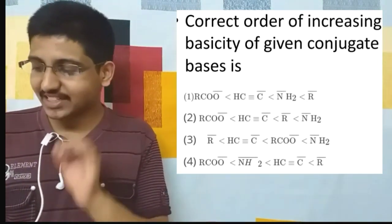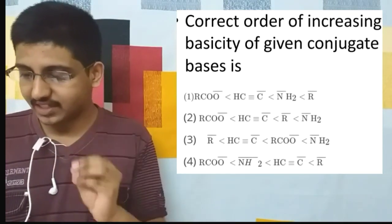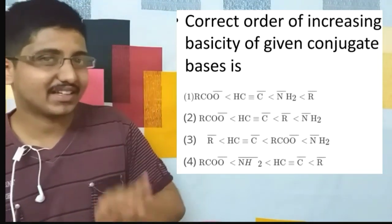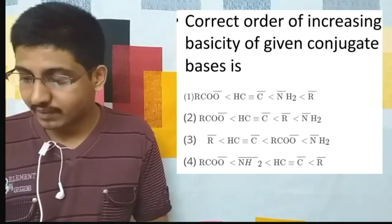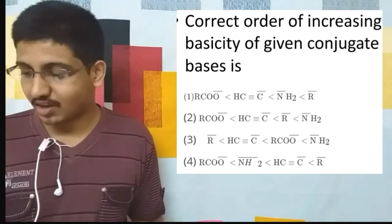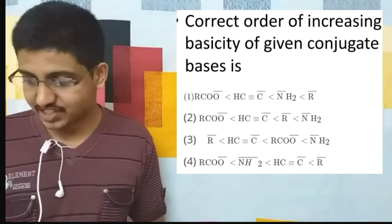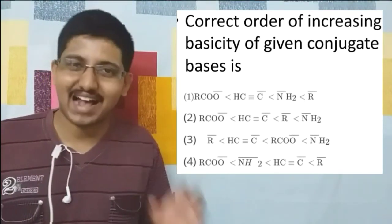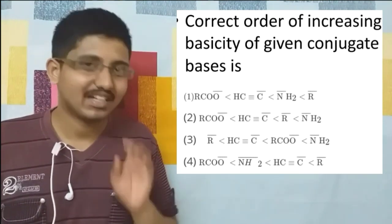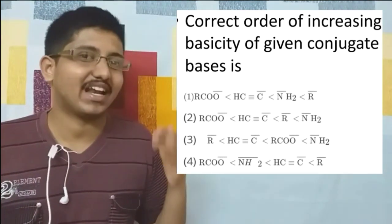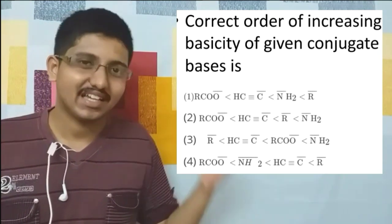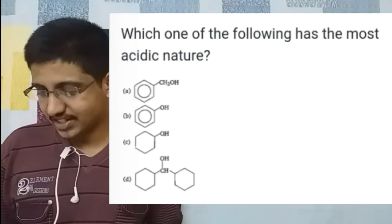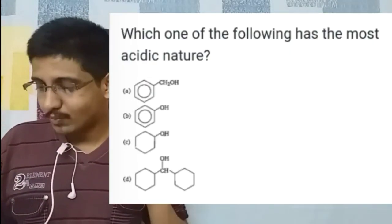Now let's look at previous year entrance exam questions. The first is a JEE question: find the correct order of increasing basicity of the conjugate bases of carboxylic acid, ethane, NH3, and an alkane. Remember: stronger the acid, weaker the conjugate base. Since carboxylic acid > ethyne > NH3 > ethane in acidity, the reverse order gives increasing basicity. The answer is option 1.